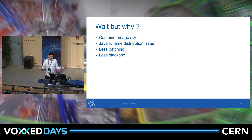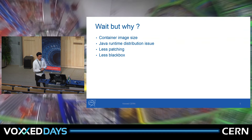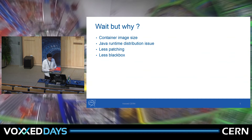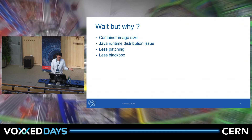Why? Because you want a smaller container — it ships faster. I don't want to upgrade the Java runtime; that's not really my business, I just care about the application. As a result, it's less patching and less of a black box. My sysadmin knows exactly what ships in my containers because it's much simpler.